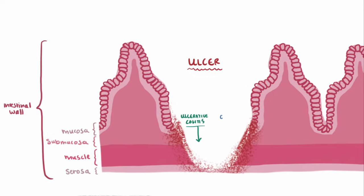...the damage and inflammation in Crohn disease extends beyond the submucosal layer and through the entire depth of the intestinal wall. Sometimes we refer to this as being transmural, from mucosa to serosa.